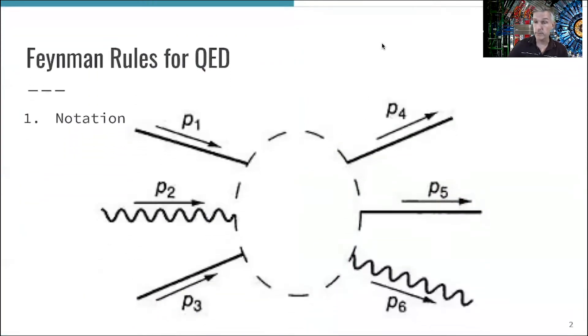We've already seen Feynman rules for our toy theory. Now the situation is more complicated because we can consider the spin of particles in addition to their energy and momenta.